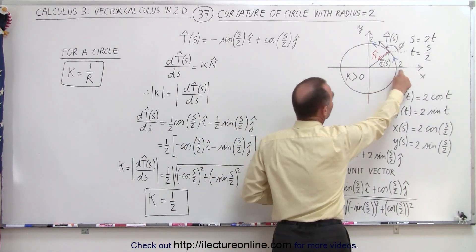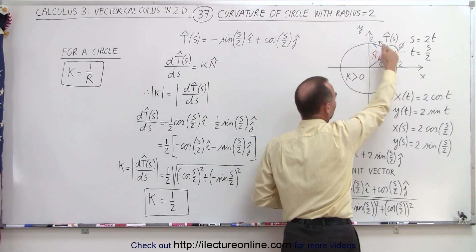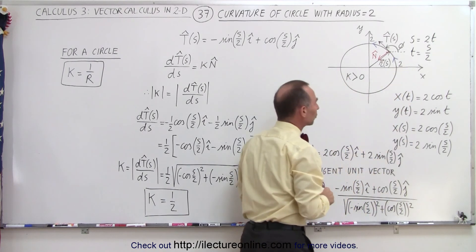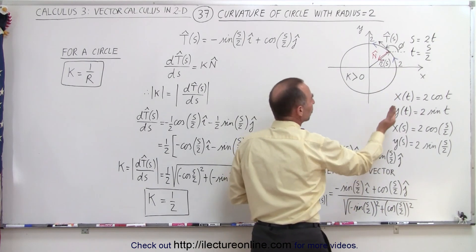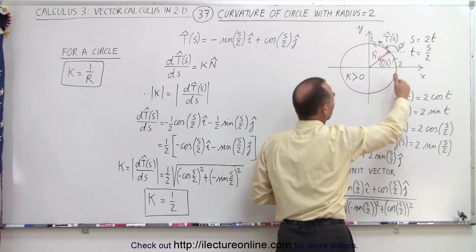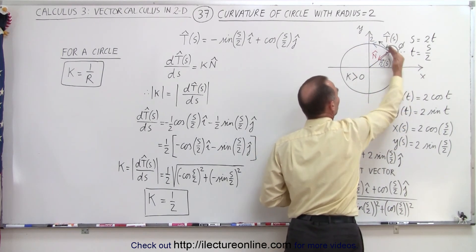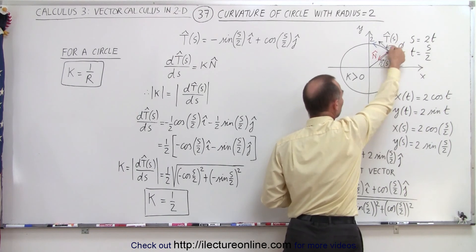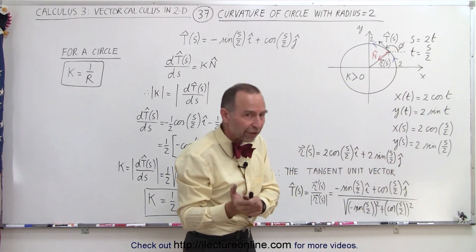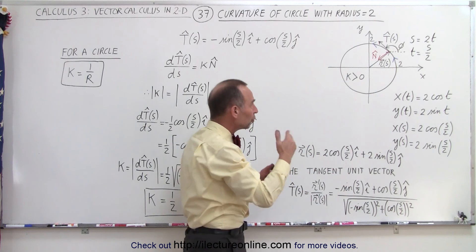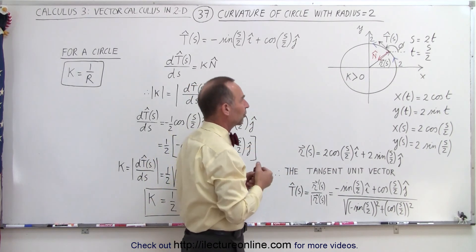Here's the circle. You can see that on the x-axis and y-axis it crosses those axes when the radius equals 2. Notice we're traveling around the circle in a counterclockwise direction, which means the unit tangent vector is directed like this. The unit normal vector will be directed like this, because to go from the unit tangent vector to the unit normal vector, you have to travel 90 degrees in a counterclockwise direction.